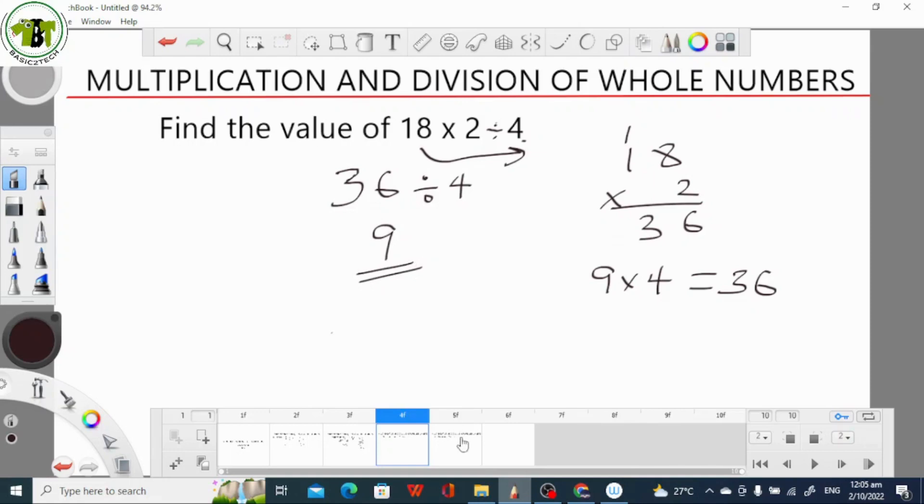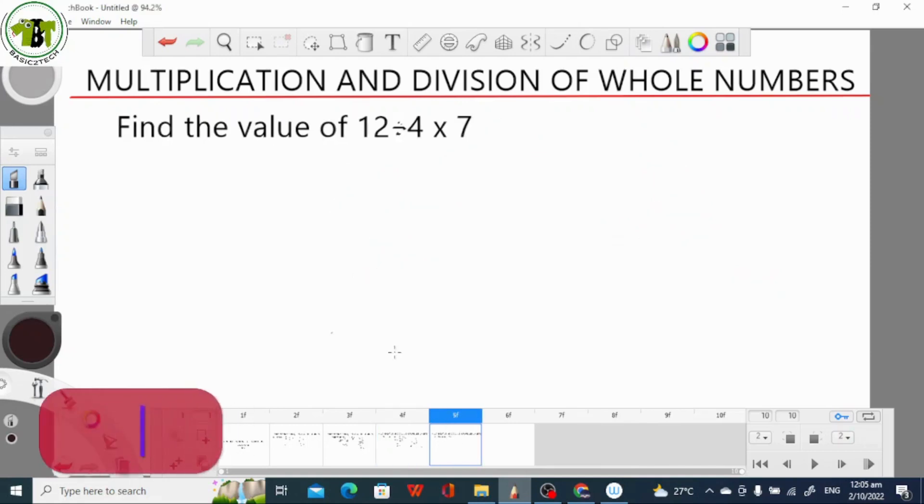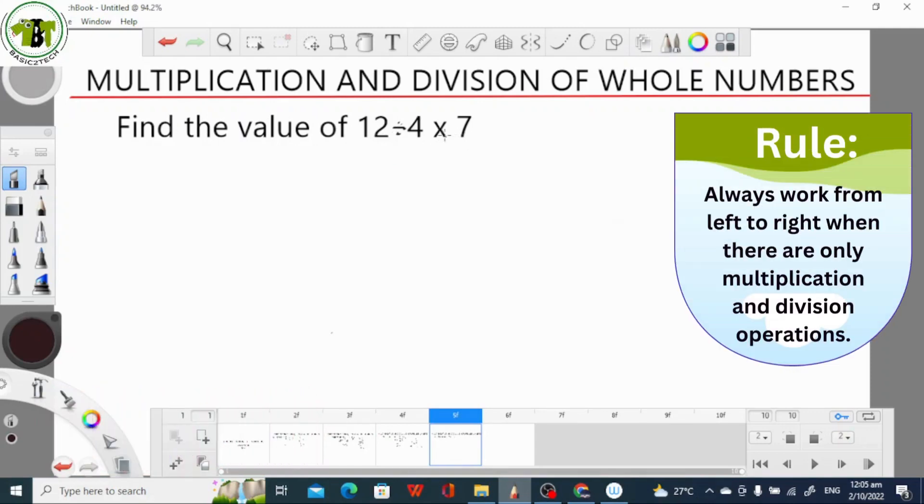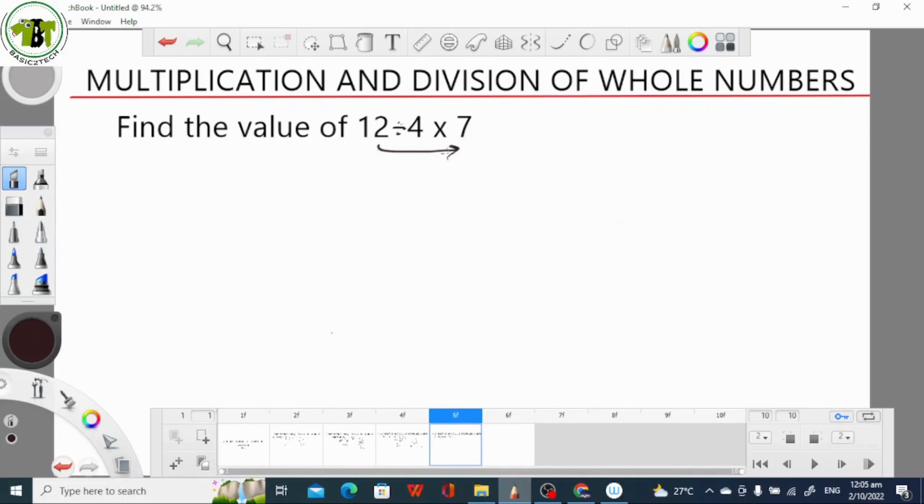Let's take a look at the next example. In this case, we are asked to find the value of 12 divided by 4 times 7. Again, the rule is 12 divided by 4. The first thing we do here is 12 divided by 4. Just like multiplication to do this, we think of a number that can multiply 4 to give us 12, and that number is 3.